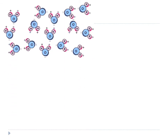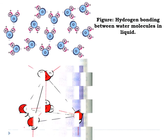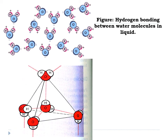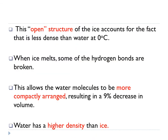In the upper image, water molecules are relatively close together in liquid form. But when it becomes solid, the dotted lines represent hydrogen bonding, and the molecules arrange themselves into an open structure with less density than the liquid form. The open structure of ice accounts for the fact that it is less dense than water at 0°C. When ice melts, some hydrogen bonds are broken, allowing water molecules to be more compactly arranged, resulting in a 9% decrease in volume. Therefore, water has a higher density than ice.